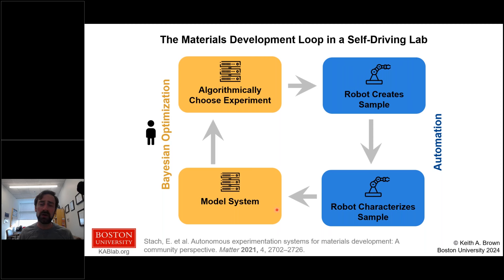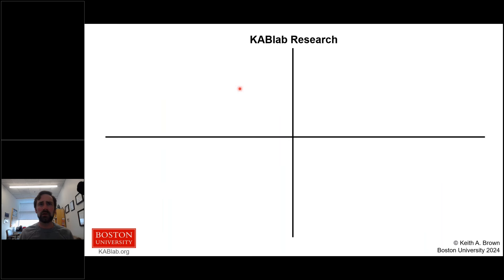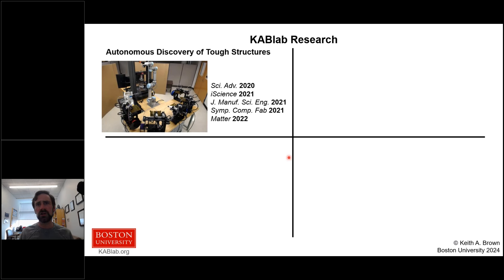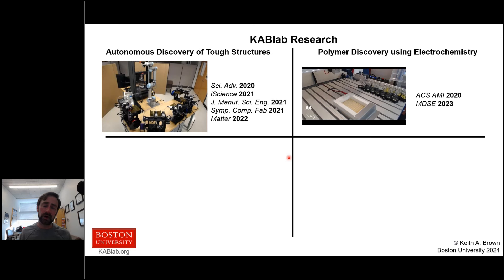Robotics allows new samples to be created rapidly with precise controls, high reliability, and associated metadata, meaning data is inherently transferable. In addition to more and better data, we use machine learning algorithms to choose each experiment to get the most value. We've traditionally focused on Bayesian optimization, which breaks this into two processes: modeling the system and using an algorithm to select the next experiment.